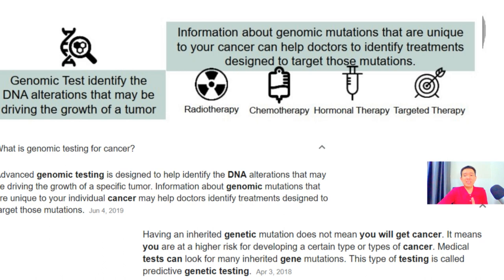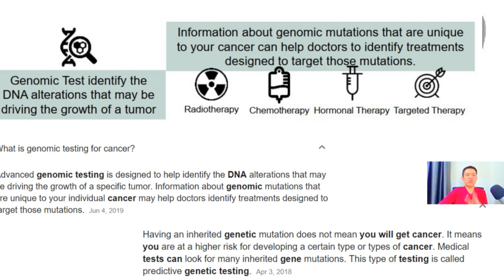Information about genomic mutations unique to your cancer can help doctors identify treatments designed to target that specific mutation, because cancer is about abnormal cells and mutation. This test enables an oncologist to identify which treatment is best suited for you — whether it's radiotherapy, chemotherapy, hormonal therapy, or targeted therapy. As of 2019, this test costs about 4,000 USD, which is roughly 15,000–16,000 Malaysian Ringgit.